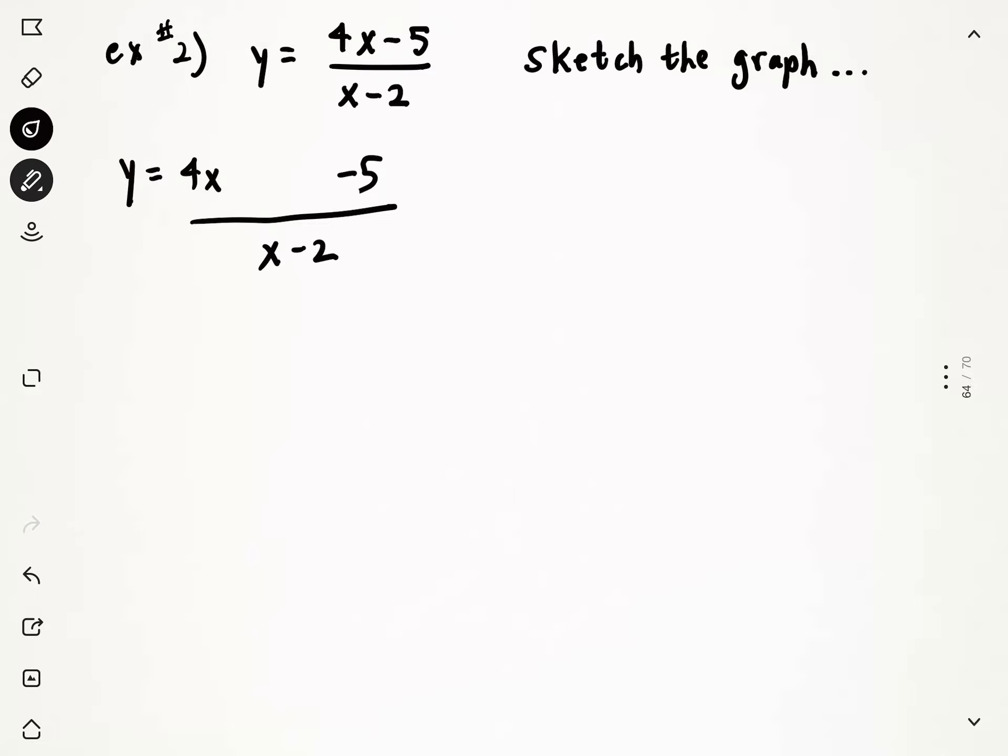So what number am I going to add and subtract? I'm going to take this coefficient in front of the x, the 4, and I'm going to look at my denominator number of negative 2. I'm going to times those together. 4 times negative 2 is negative 8.